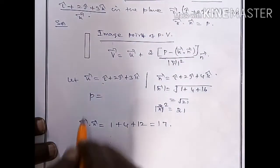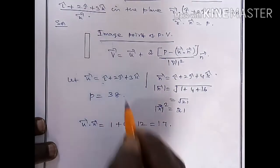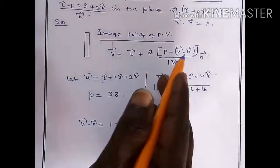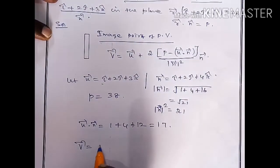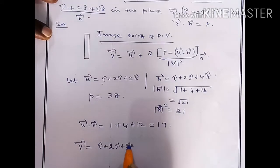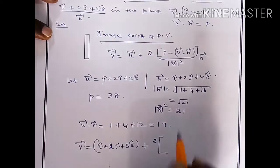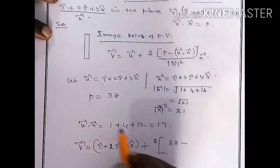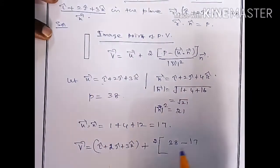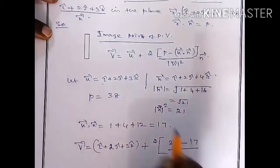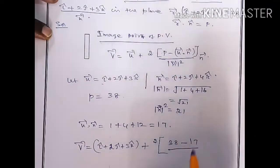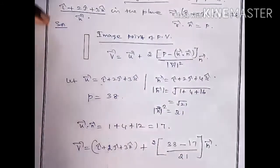Now, v vector equal to: u vector value i cap plus 2j cap plus 3k cap, plus 2 into (p value 38 minus u dot n value 16) divided by n vector square value 21, into n vector.